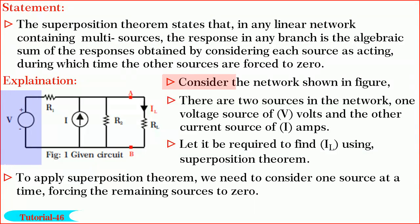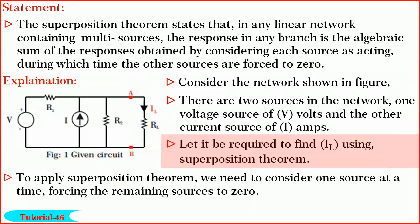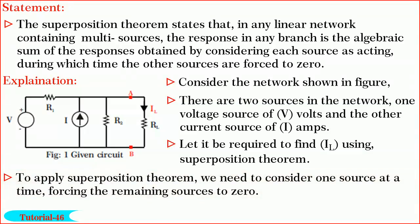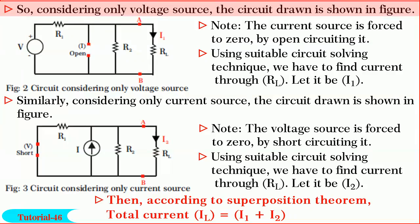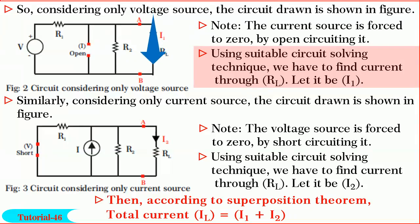Now let me explain. Consider the network shown in the figure. There are two sources in the network: one voltage source of E volts and the other a current source of I amperes. Let it be required to find the load current IL using superposition theorem. To apply superposition theorem, we consider one source at a time, forcing the remaining source to zero. Considering only the voltage source of E volts, the circuit drawn is shown in the figure. Note the current source is forced to zero by open-circuiting it. Using a suitable circuit solving technique, we find the current through RL — let it be I1 amperes.